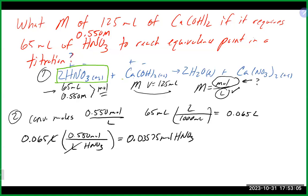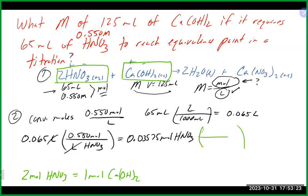Now go from moles of nitric acid to moles of calcium hydroxide using the balanced equation. For every 2 moles of HNO₃, there is 1 mole of Ca(OH)₂. So we place 1 mol Ca(OH)₂ on top and 2 mol HNO₃ on the bottom, and divide: 0.03575 ÷ 2 = 0.01788 moles of Ca(OH)₂.